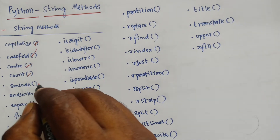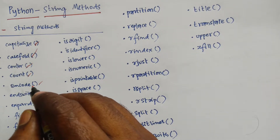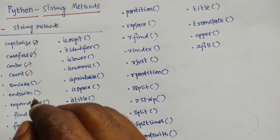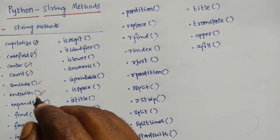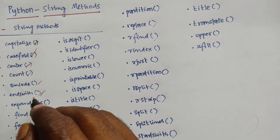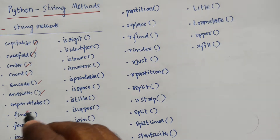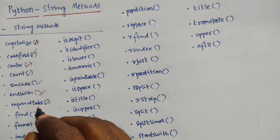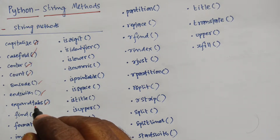Next one is encode, which returns an encoded version of the string. Then endswith, which returns true if the string ends with the specified value. Next is expandtabs, which sets the tab size of the string — you can change from 4 tabs, 5 tabs, 6 tabs, and so on.